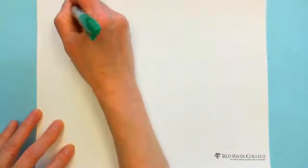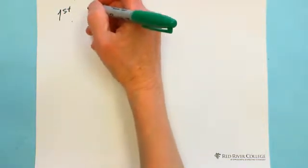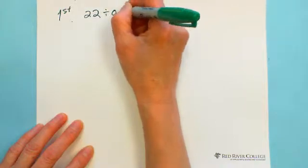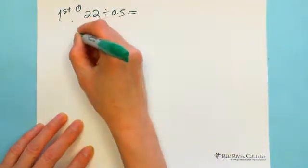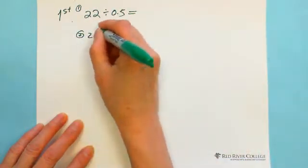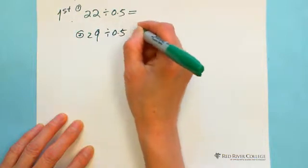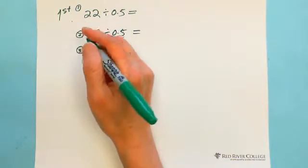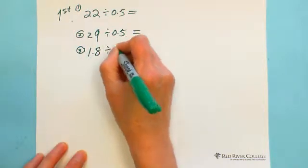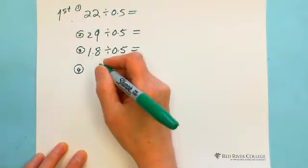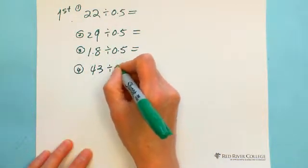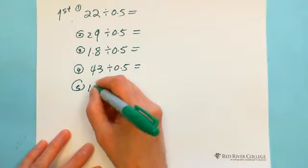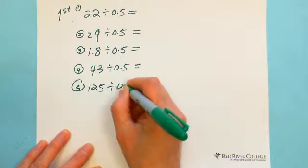The first trick is when a number is divided by 0.5. For example: 22 divided by 0.5, or 29 divided by 0.5, or 1.8 divided by 0.5, or 43 divided by 0.5, or 125 divided by 0.5.